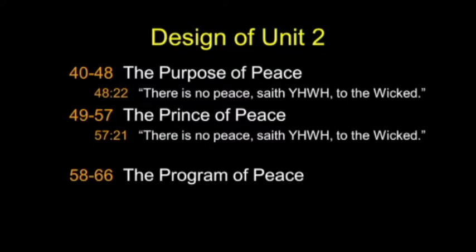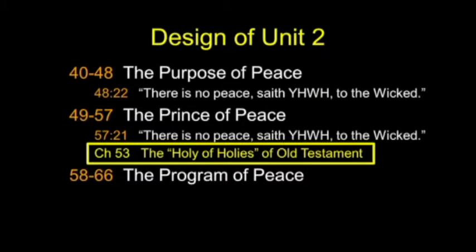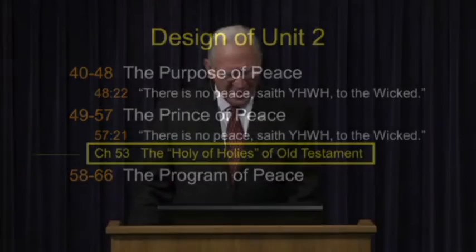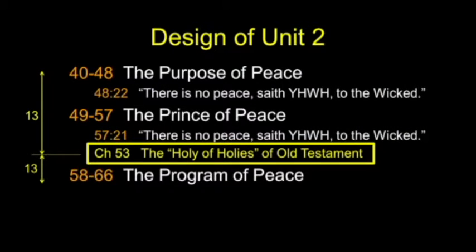The prince of peace section is bracketed by verse 48:22 and 57:21 — 'There is no peace, saith the Lord, to the wicked.' The Holy of Holies of the Old Testament, in the minds of many, is chapter 53. It happens to be in the exact center of the second unit, with 13 chapters leading up to it and 13 chapters that follow it.